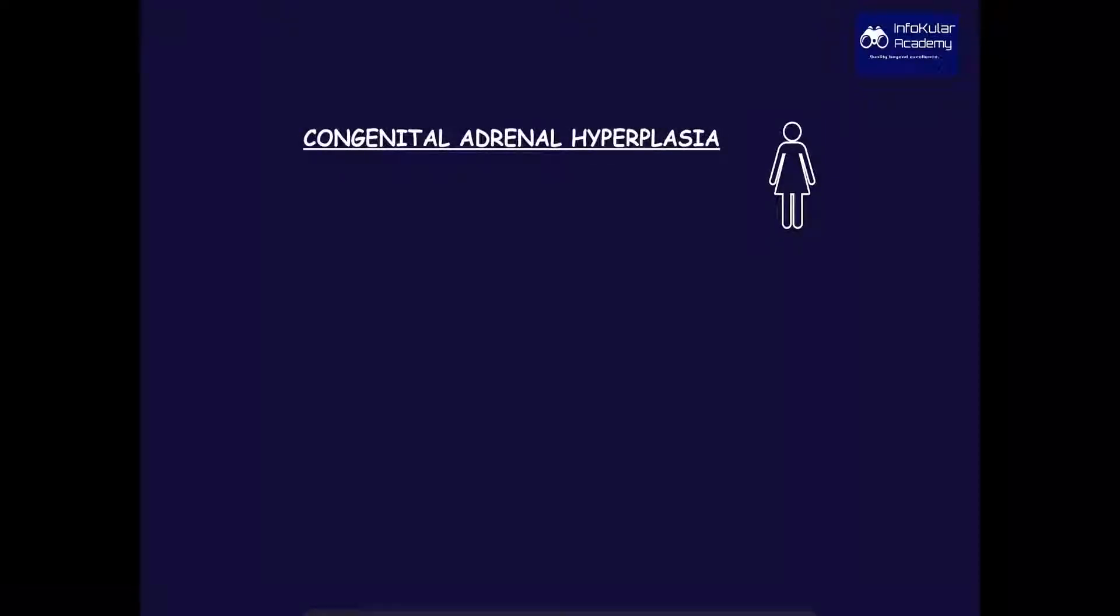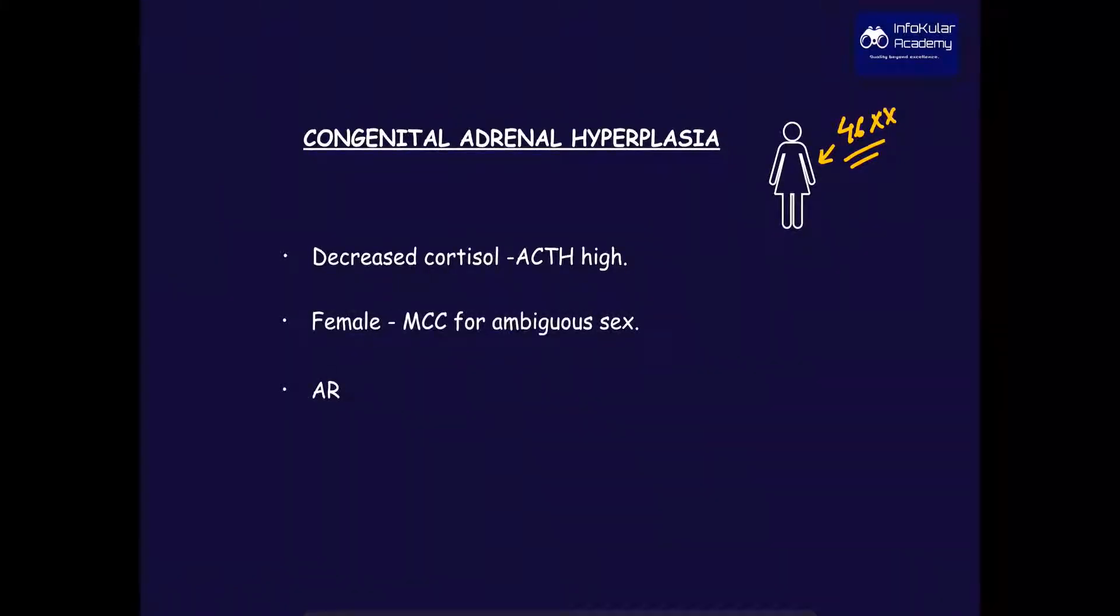Next entity is congenital adrenal hyperplasia. By the picture itself, you can see it is seen in females. It is the most common cause of ambiguous genitalia in females. There is decreased cortisol levels and ACTH is high.